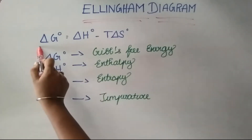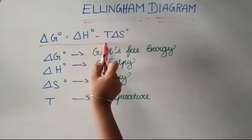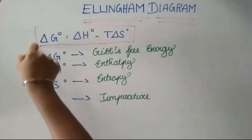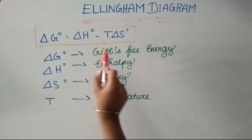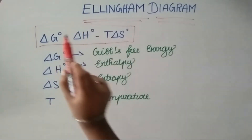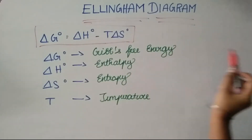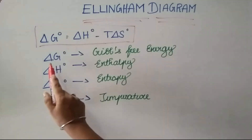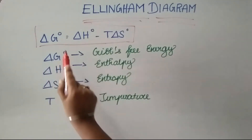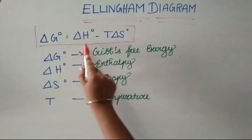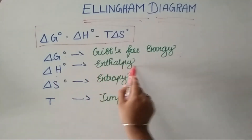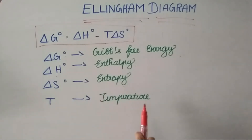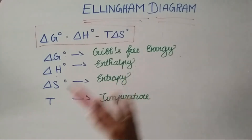First, the equation: δG⁰ = δH⁰ - T × δS. This equation helps find the spontaneity of a reaction. δG⁰ is Gibbs Free Energy, δH is enthalpy, δS is entropy, and T is temperature.